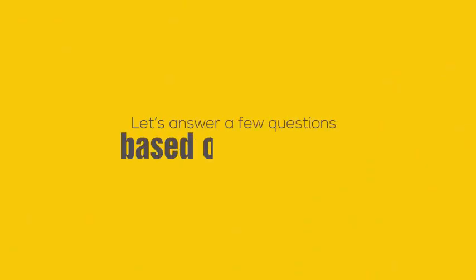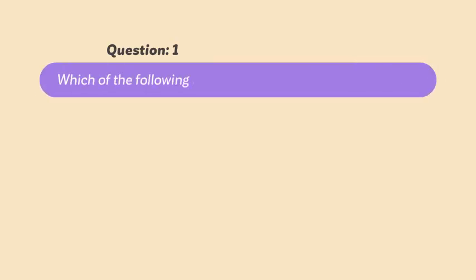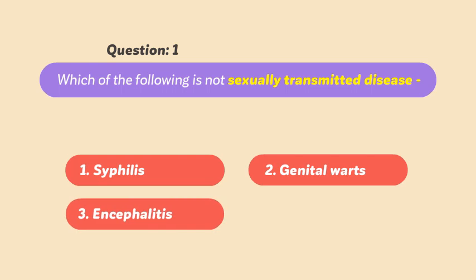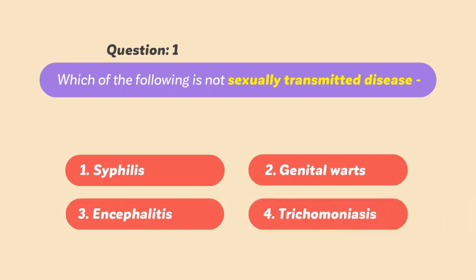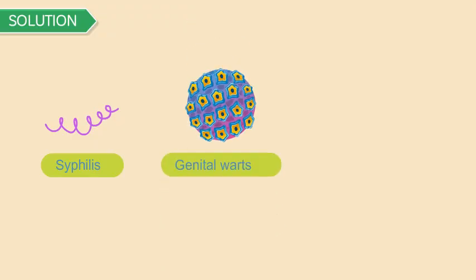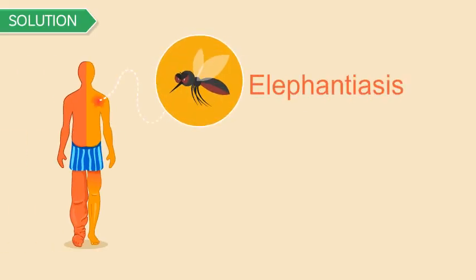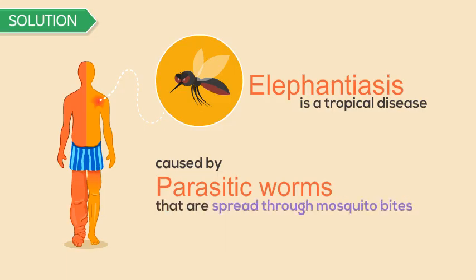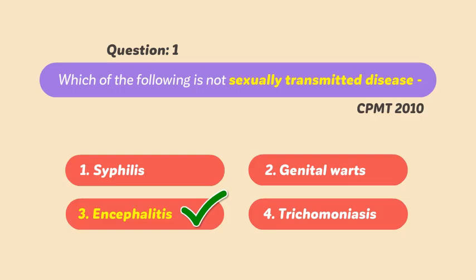Let's answer a few questions based on this topic. Question 1: Which of the following is NOT a sexually transmitted disease? (1) Syphilis, (2) Genital warts, (3) Encephalitis, (4) Trichomoniasis. This question was asked in CPMT 2010. Solution: Syphilis, genital warts, and trichomoniasis are STDs, while elephantiasis is a tropical disease caused by parasitic worms spread through mosquito bites. Hence Option 3 is the correct answer.